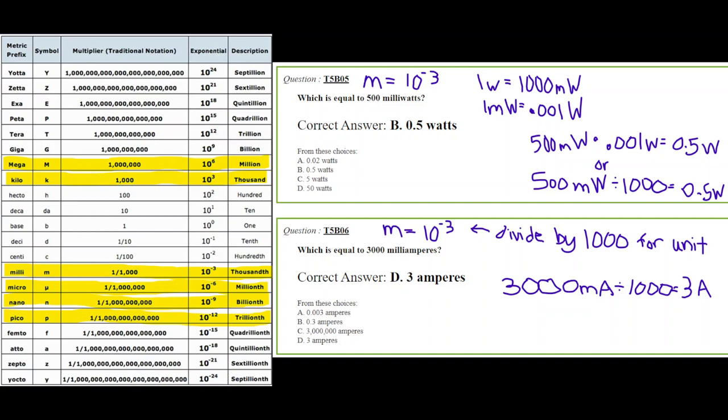For question number six, it says, which is equal to 3,000 milliampers? Well, if you look, a milli is 10 to the negative 3, which means divide by 1,000 for that unit. So if you take 3,000 and divide by 1,000, you get 3 amperes. And amperes is the base unit. And that is the answer to question number six.